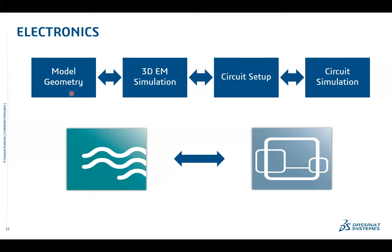In the first step, you have created a PCB model — you have an ODB++ file or an EDA vendor file that you can read into CST. The model geometry is imported, and then you perform a 3D electromagnetic simulation, completely solving the entire Maxwell's equations. The effect of the parasitic layout of the board — all of it — is taken into account.